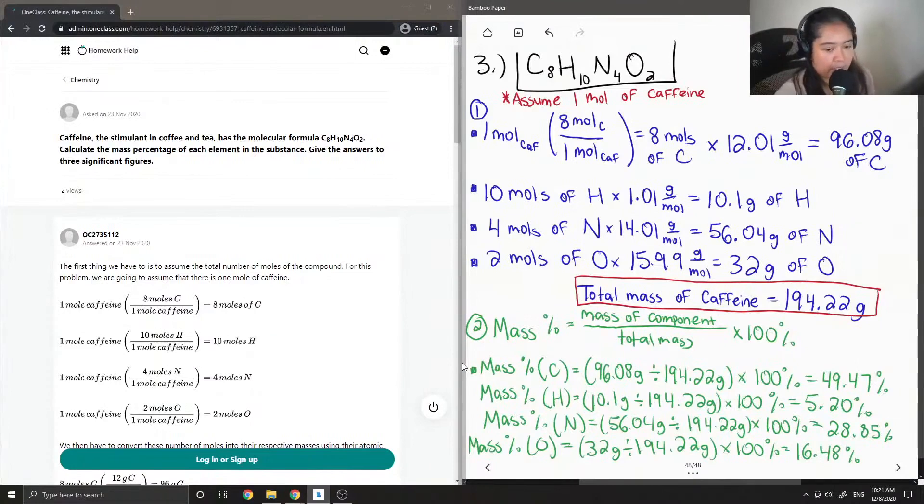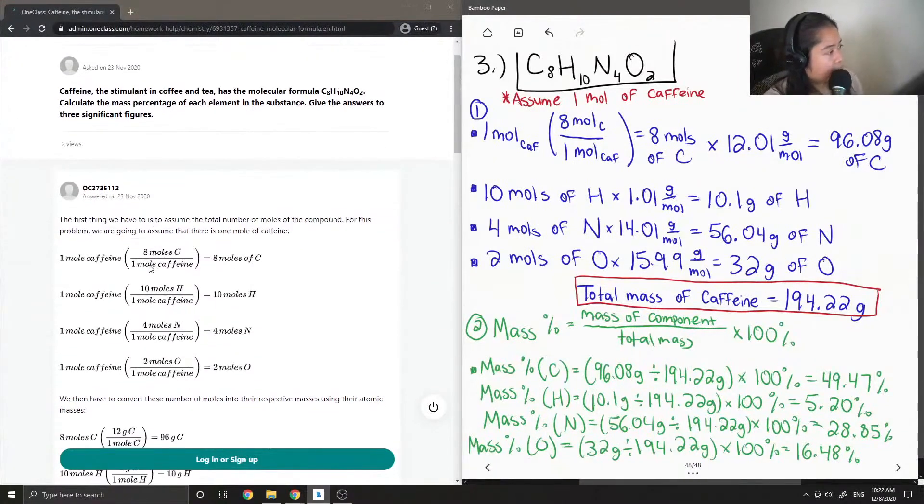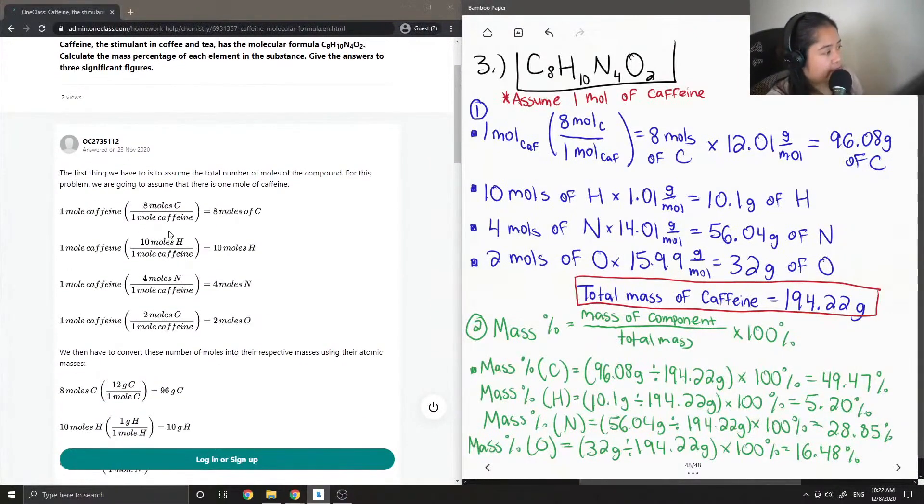Okay so you can double check your answer and if you add up all the different percentages you should get 100%. So let's see what the tutor said. First thing we have to do is to assume the total number of moles of the compound. For this problem we're going to assume that there is one mole of caffeine.